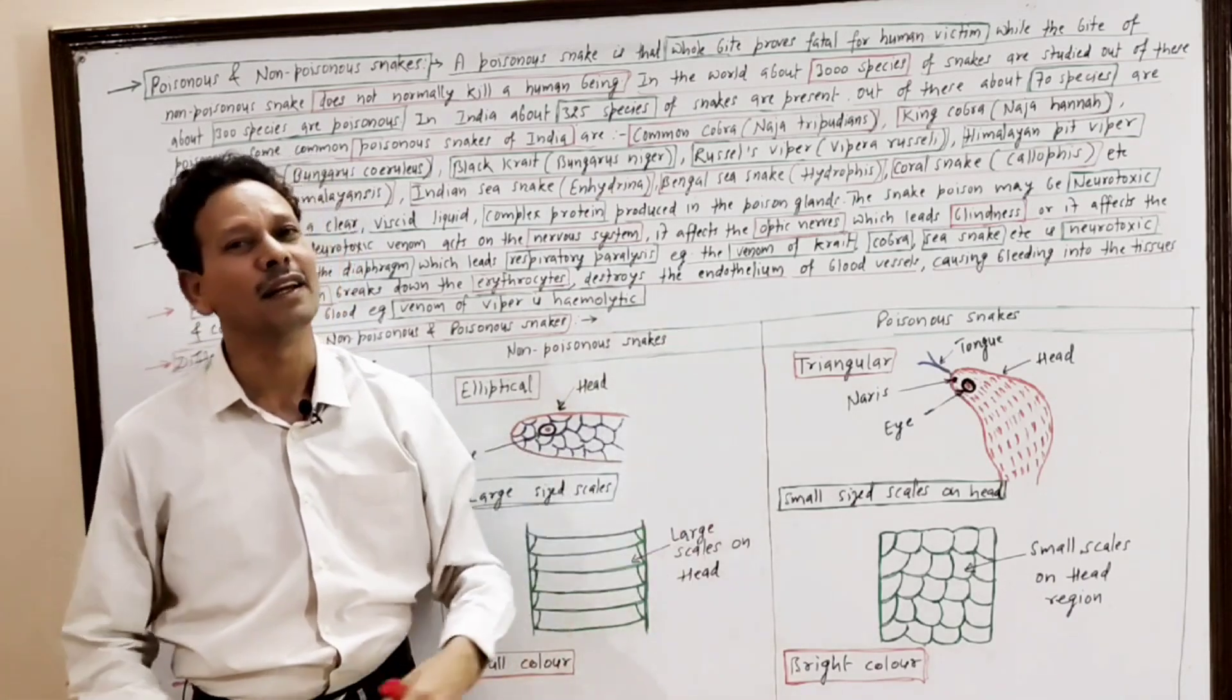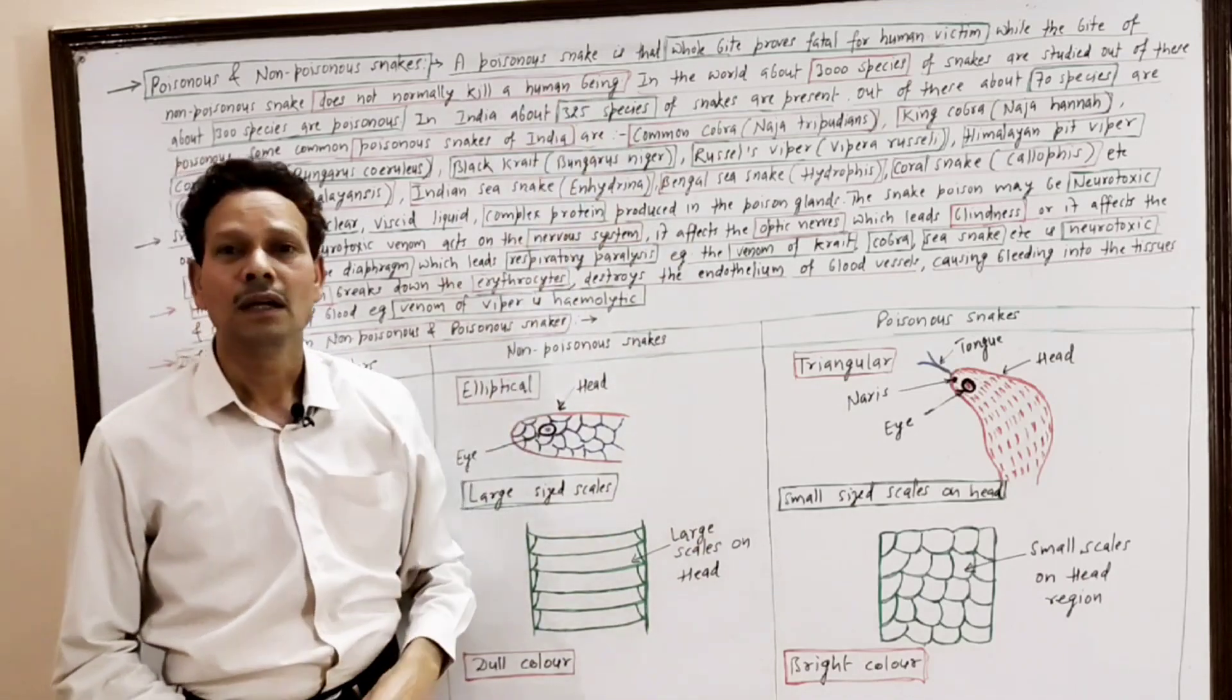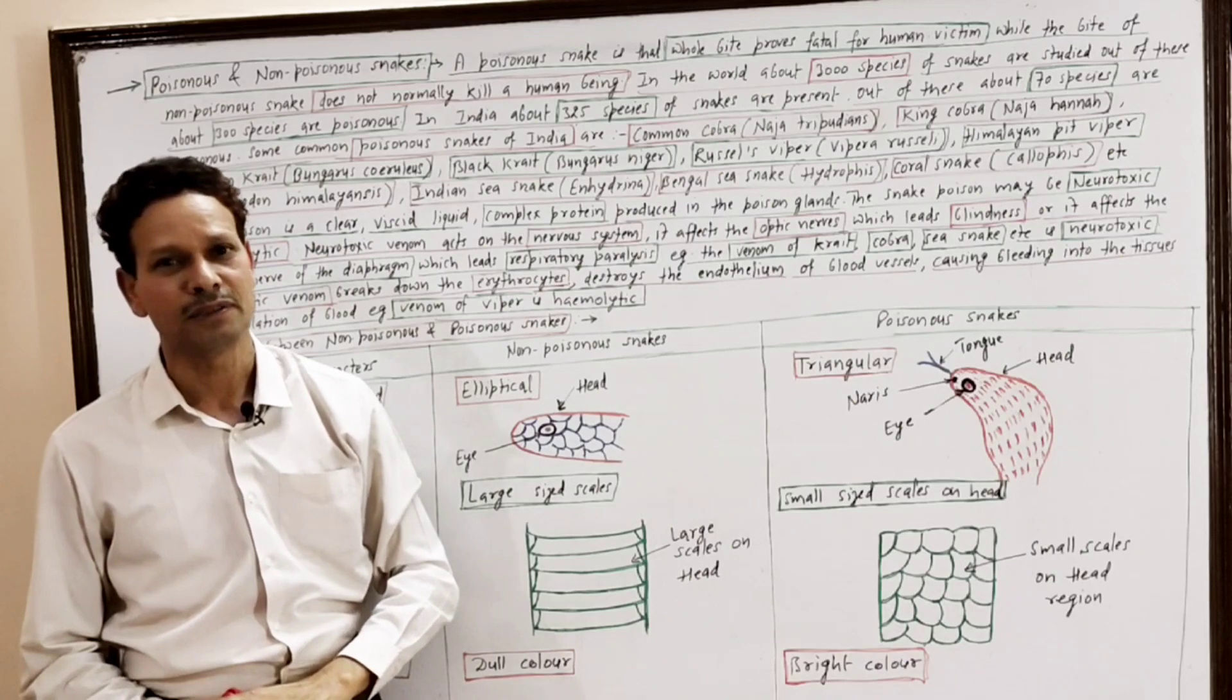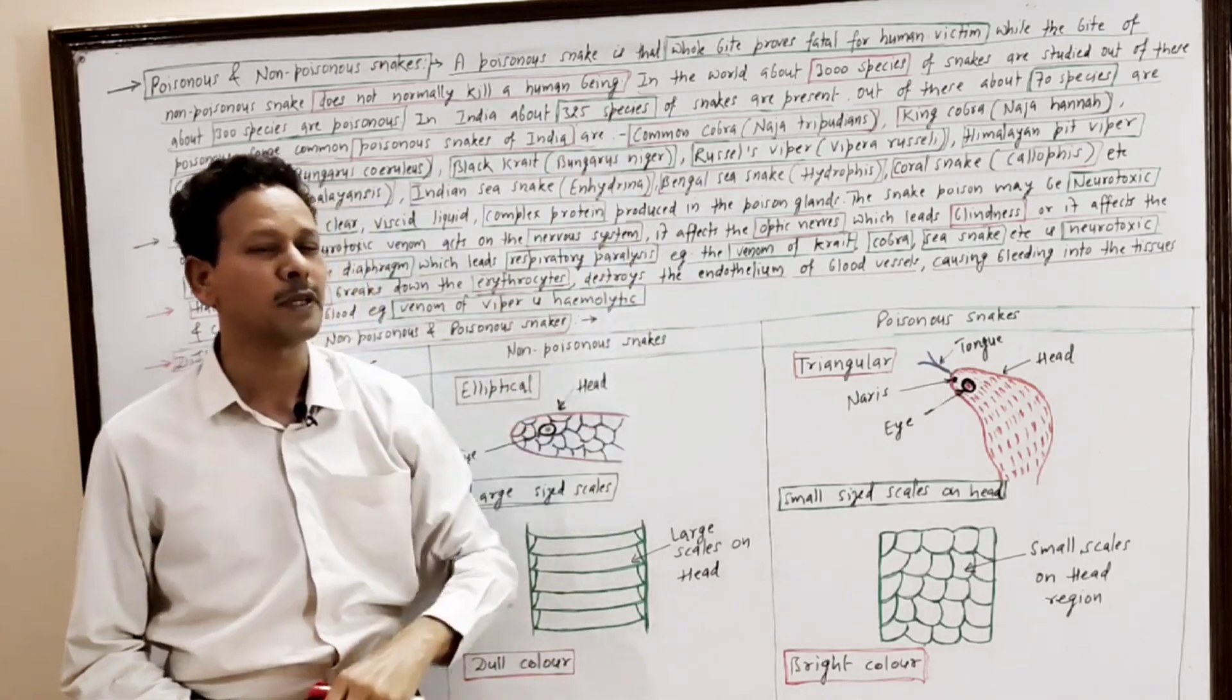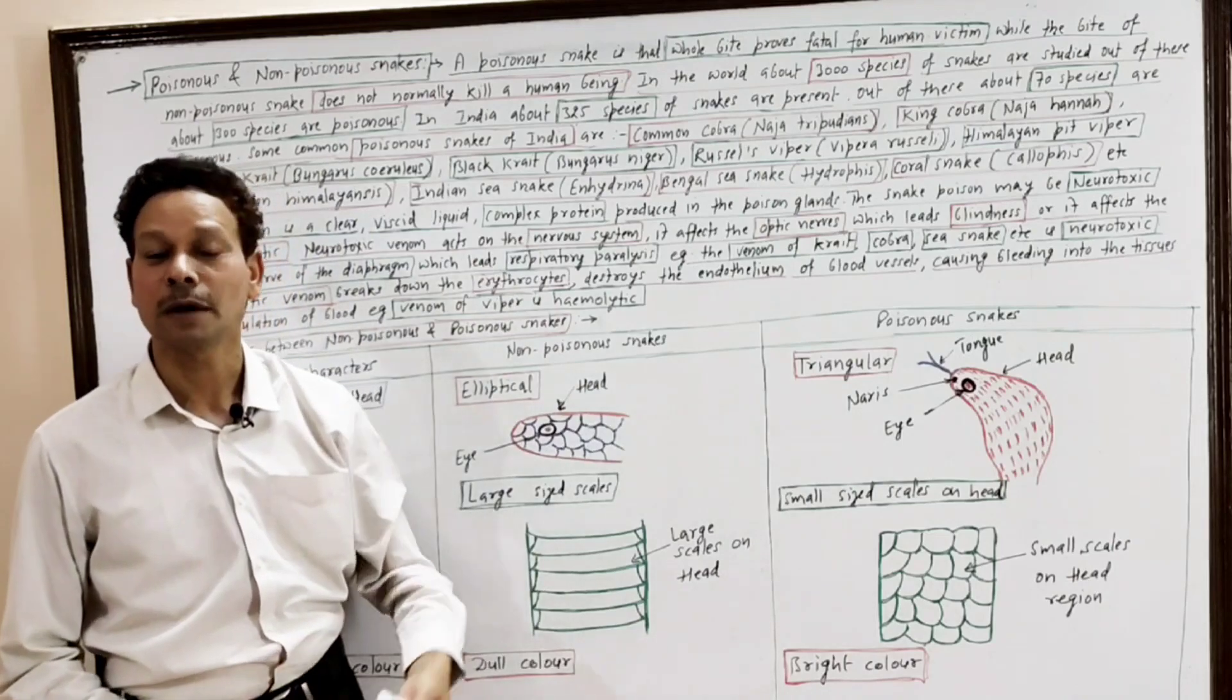In the world, about 3000 species of snakes are reported. Out of these 3000 species, only 300 species are poisonous.